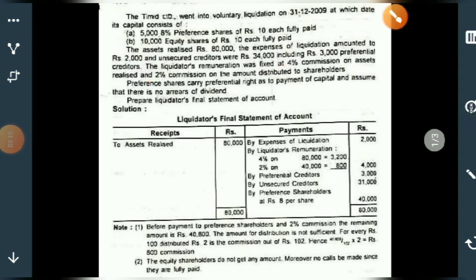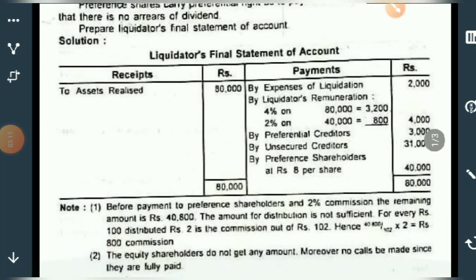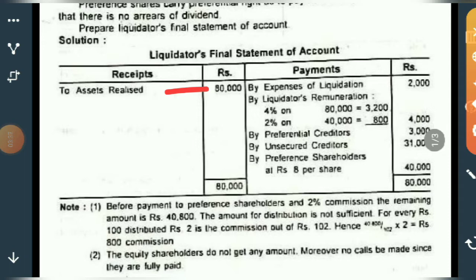Now let us see the answer. First, you have to record whatever receipts there are on the receipts side — the left-hand side. Assets realized means assets sold, and the amount realized is rupees 80,000.